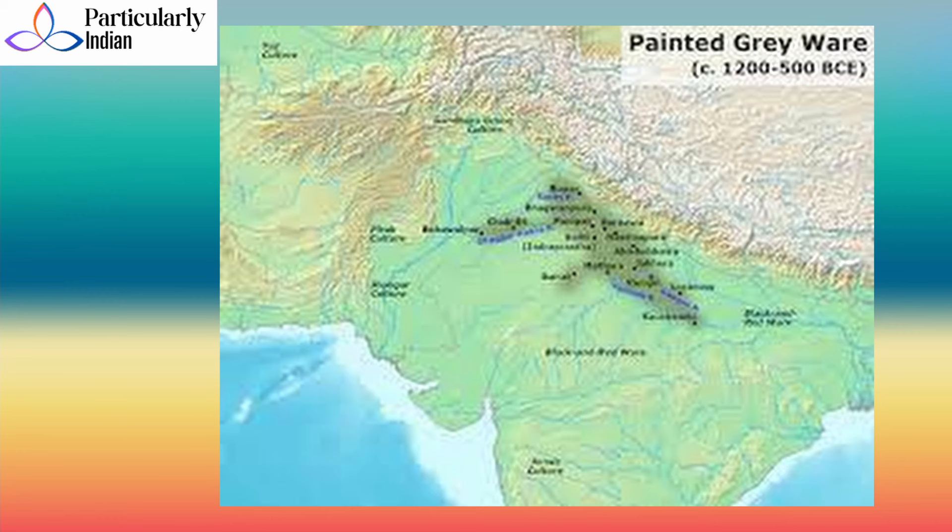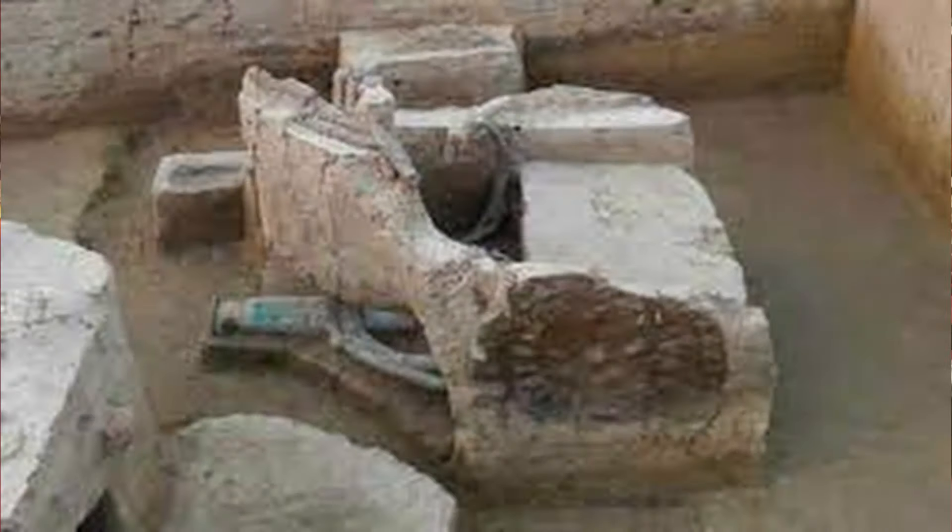According to B.B. Lal, the Painted Greyware culture could date to around 1000 BCE, and the time bracket of the Kurukshetra War was calculated at 1000 to 900 BCE. In 2006, there was a discovery of an ancient burial ground in Sinauli, about 90 kilometers from Hastinapur. A bronze horse-driven war chariot was found in 2018, and the excavations at Sinauli in 2018 pushed back the date of the Mahabharata War to around 2000 BCE, because the epic describes the use of horse chariots.